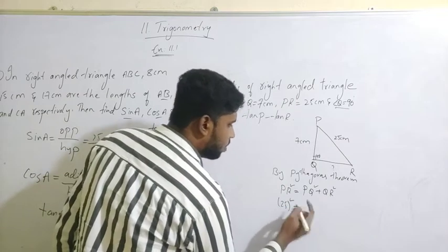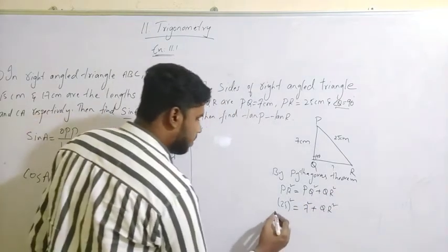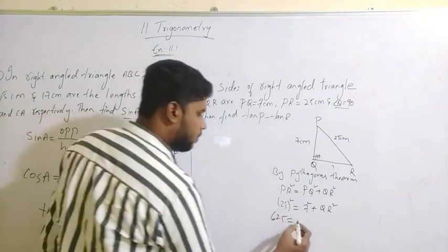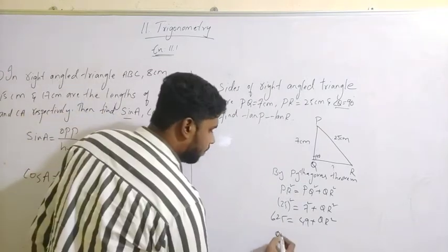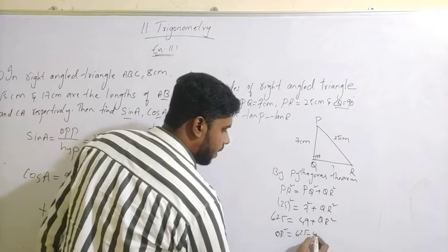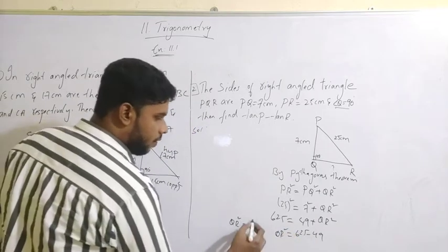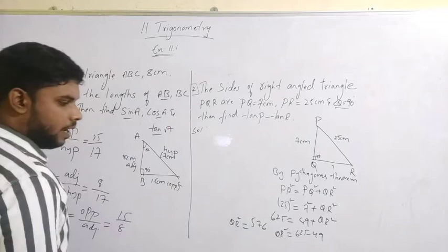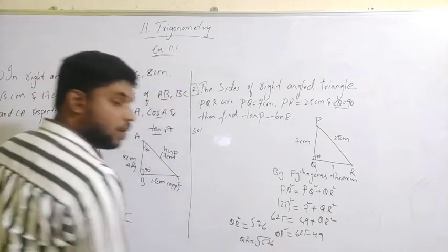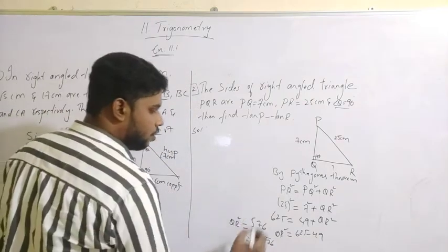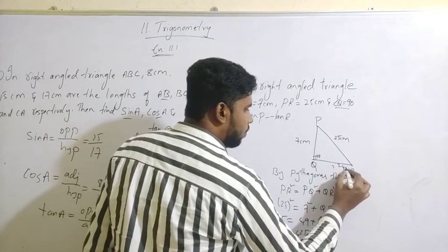25 squared equals PQ squared plus QR squared. PQ is 7, so 25 squared is 625, which equals 7 squared (49) plus QR squared. Bringing 49 to the other side: QR squared equals 625 minus 49, which is 576. Taking the square root, QR equals root 576, which is 24. So QR is equal to 24 units.